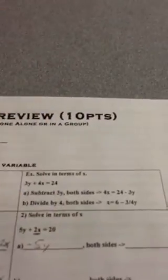Alright, now we're going to do the same equation, but we're going to solve in terms of x instead. So now we want to get x alone, so what we'll do is subtract 5y from both sides. So now we have 2x equals 20 minus 5y.